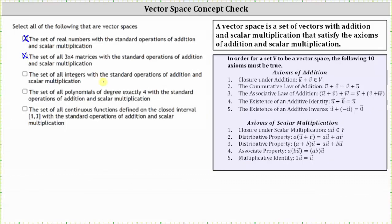Next we have the set of all integers with the standard operations of addition and scalar multiplication. Looking at the axioms of addition: adding two integers gives another integer, so we have closure under addition. Integer addition is commutative and associative. Zero is an integer, so we have the additive identity. Every integer has its opposite, verifying the additive inverse. But moving on to the axioms of scalar multiplication, we run into a problem. Remember, scalars can be any real number. If we take any real number and multiply it by an integer, we do not always get another integer — so we don't have closure under scalar multiplication.